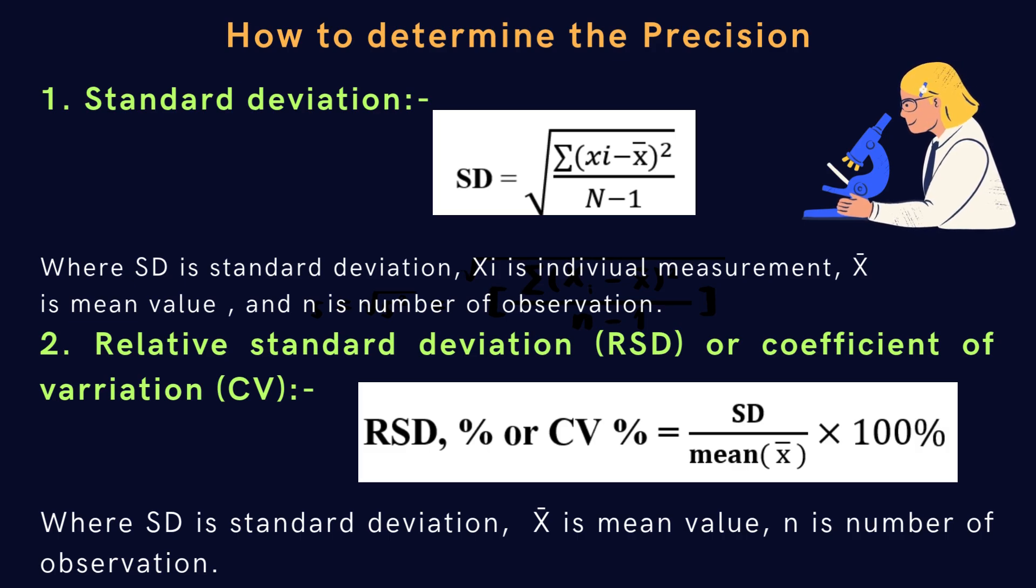Then, here we learn how the precision can be determined or it can be expressed quantitatively. There are two ways by which it can be expressed. First one is standard deviation SD, and another one is relative standard deviation or coefficient of variation CV. The formula for standard deviation is square root of summation of Xi minus X bar, bracket of, power 2, divided by N minus 1. Where SD is standard deviation, Xi is individual measurement, X bar is mean value, and N is number of observation.